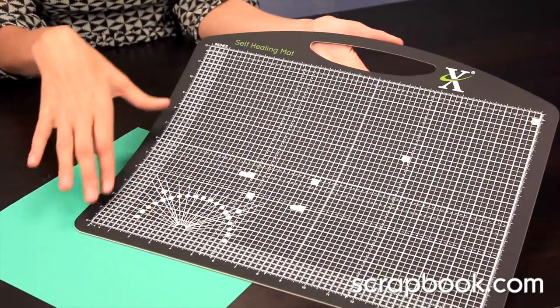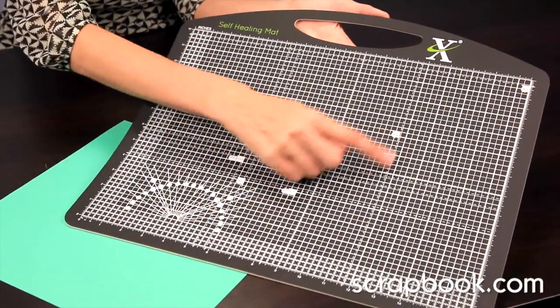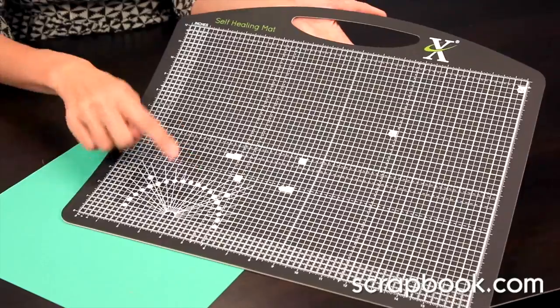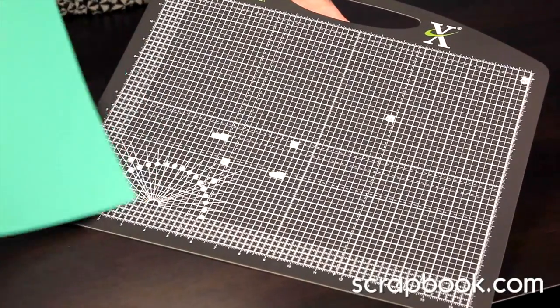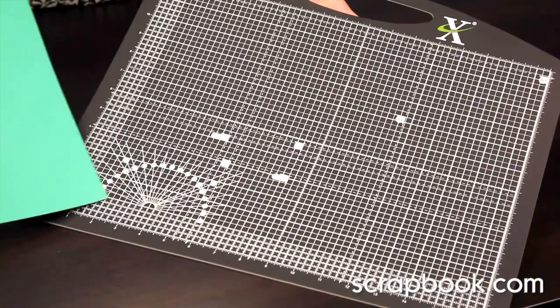As you can see, it's perfect and it has all the different sizes that you would most use on the grid itself, as well as the angle guides here.